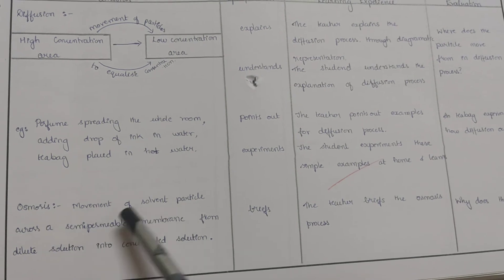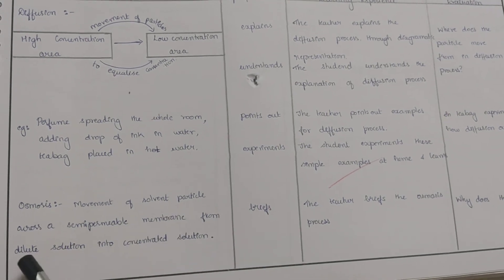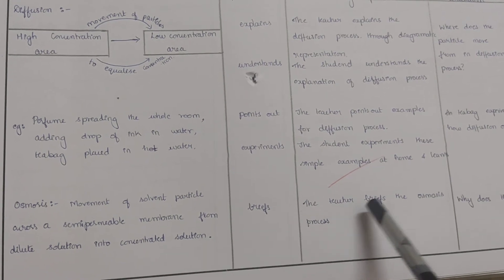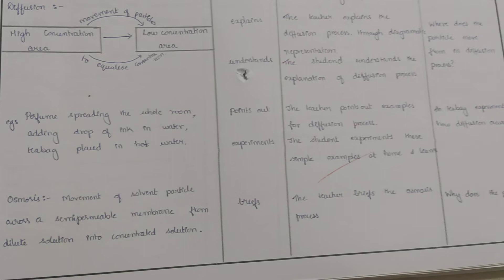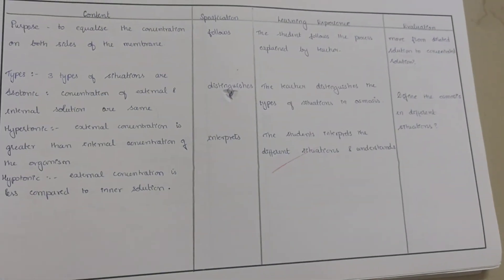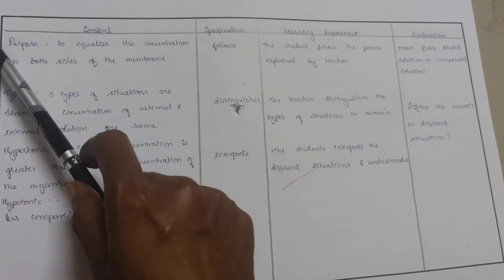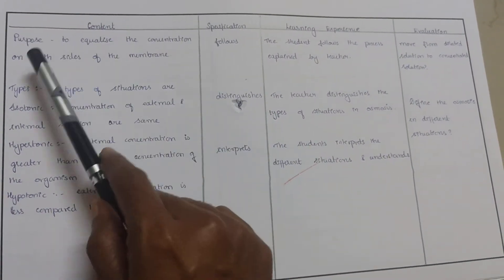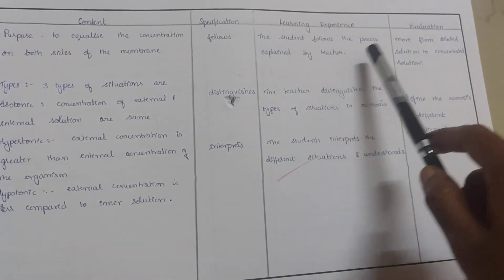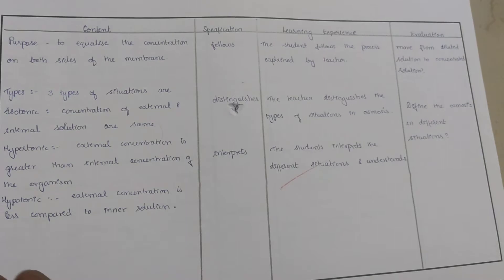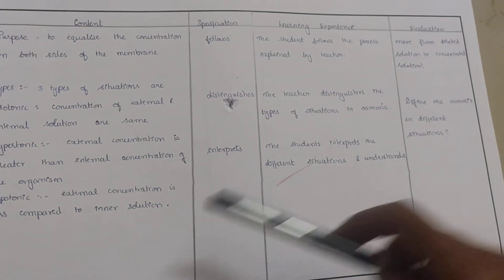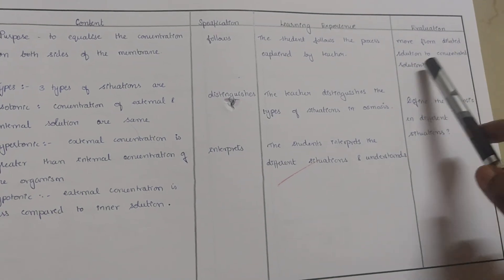Osmosis: movement of solvent particle across a semi-permeable membrane from dilute solution into concentrated solution. The teacher briefs the osmosis process. The purpose to equalize the concentration on both sides of the membrane. The student follows the process explained by the teacher. Why does the particle move from dilute solution to concentrated solution?